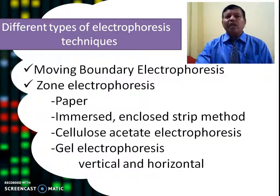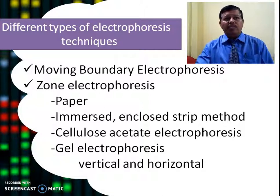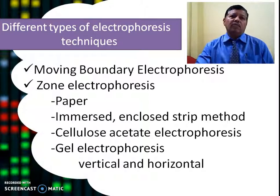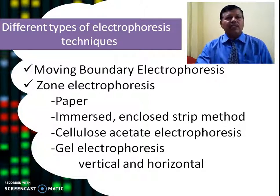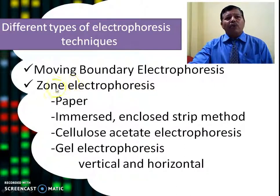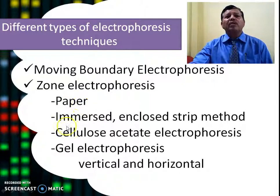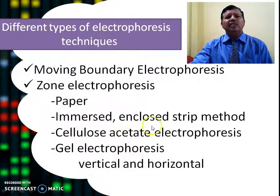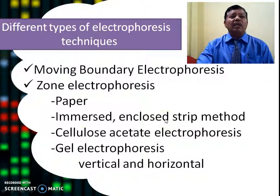There are two types of electrophoresis: moving boundary electrophoresis and zone electrophoresis. In zone electrophoresis, we can use paper, cellulose paper, cellulose acetate, or gel electrophoresis.